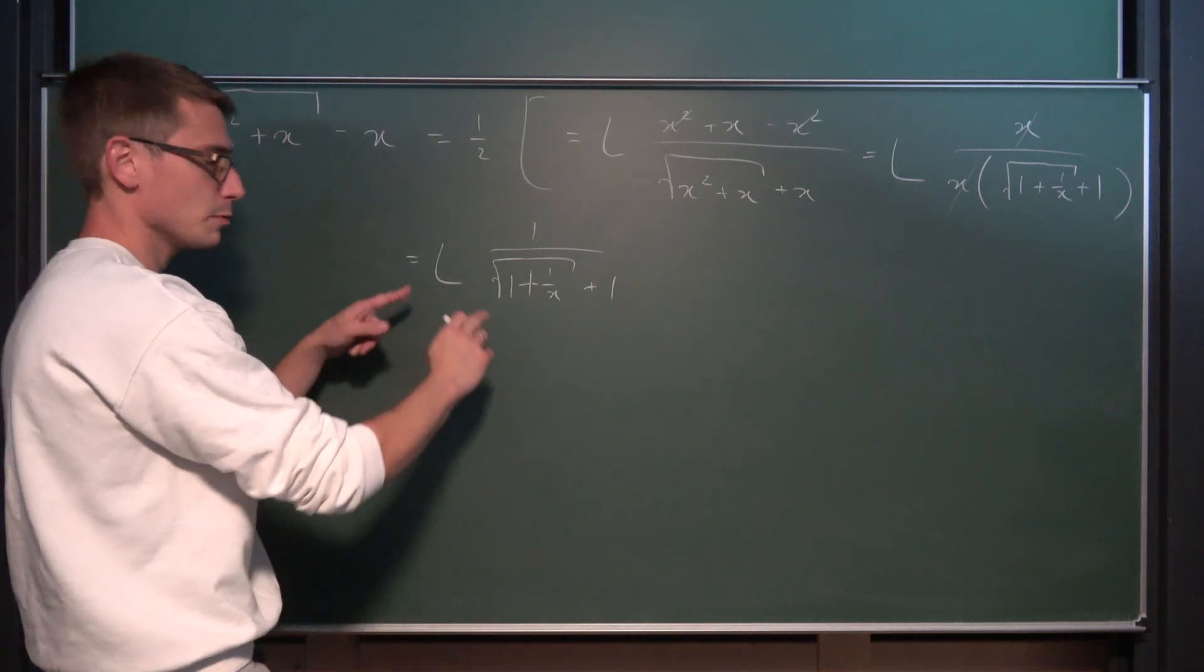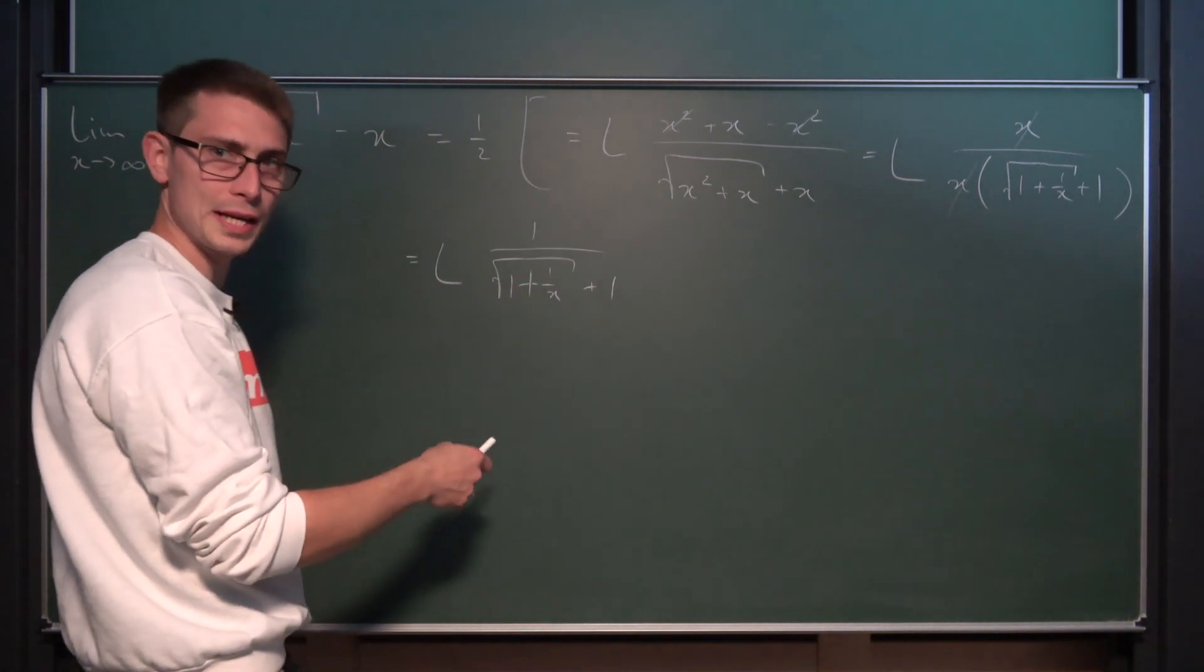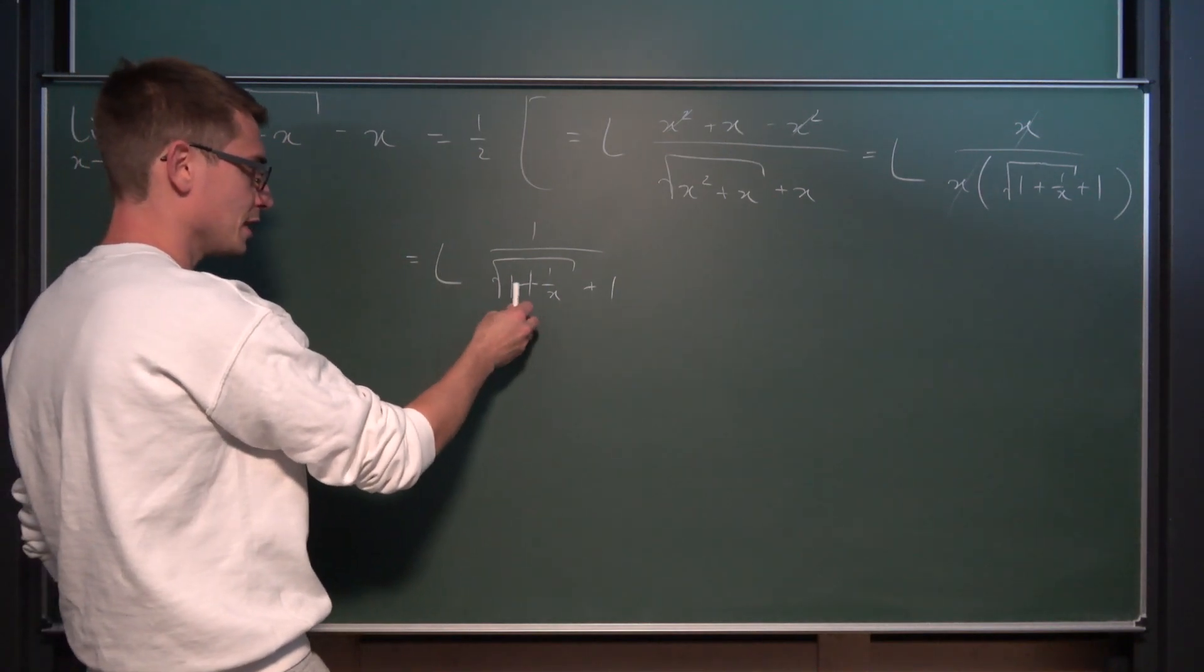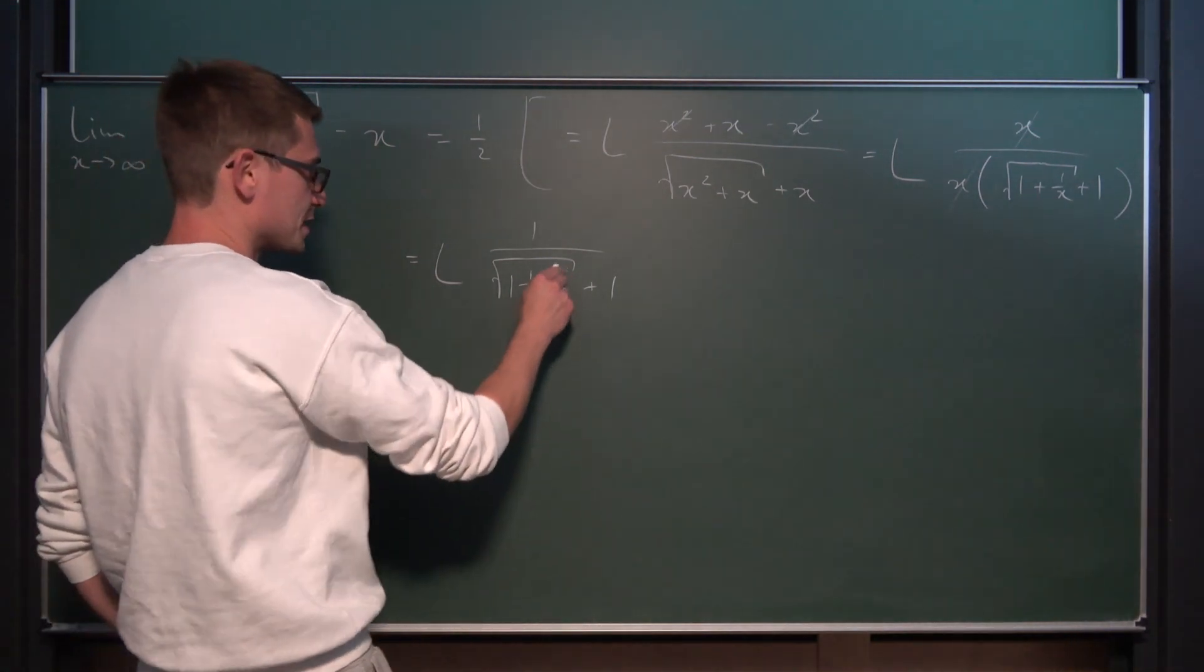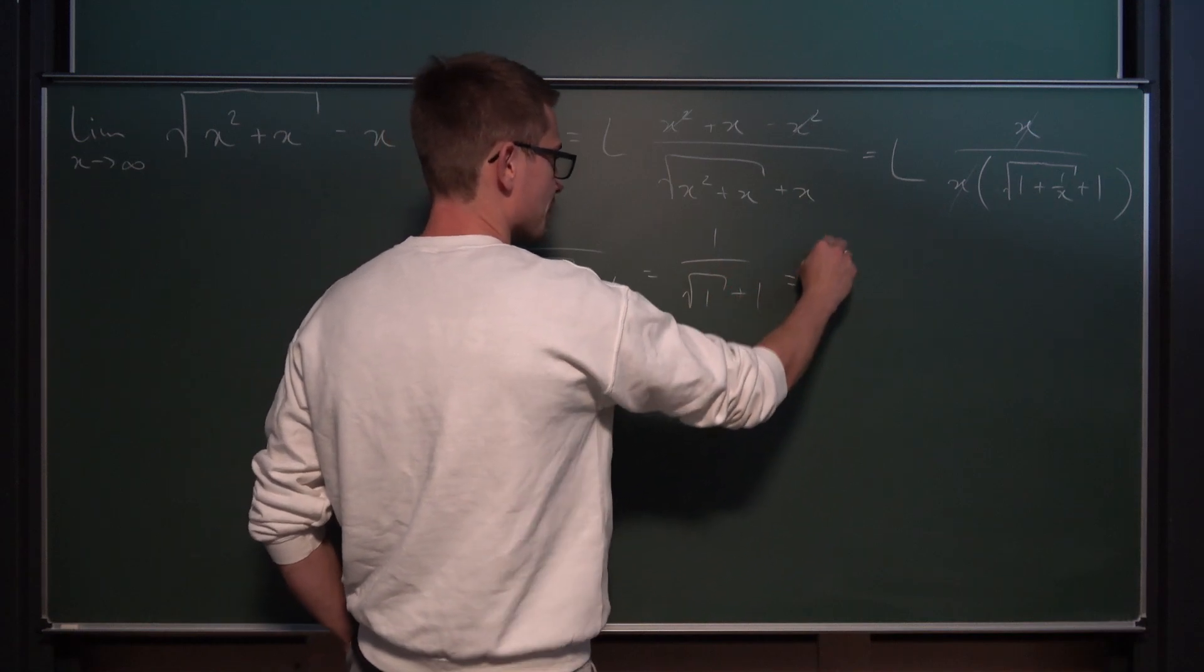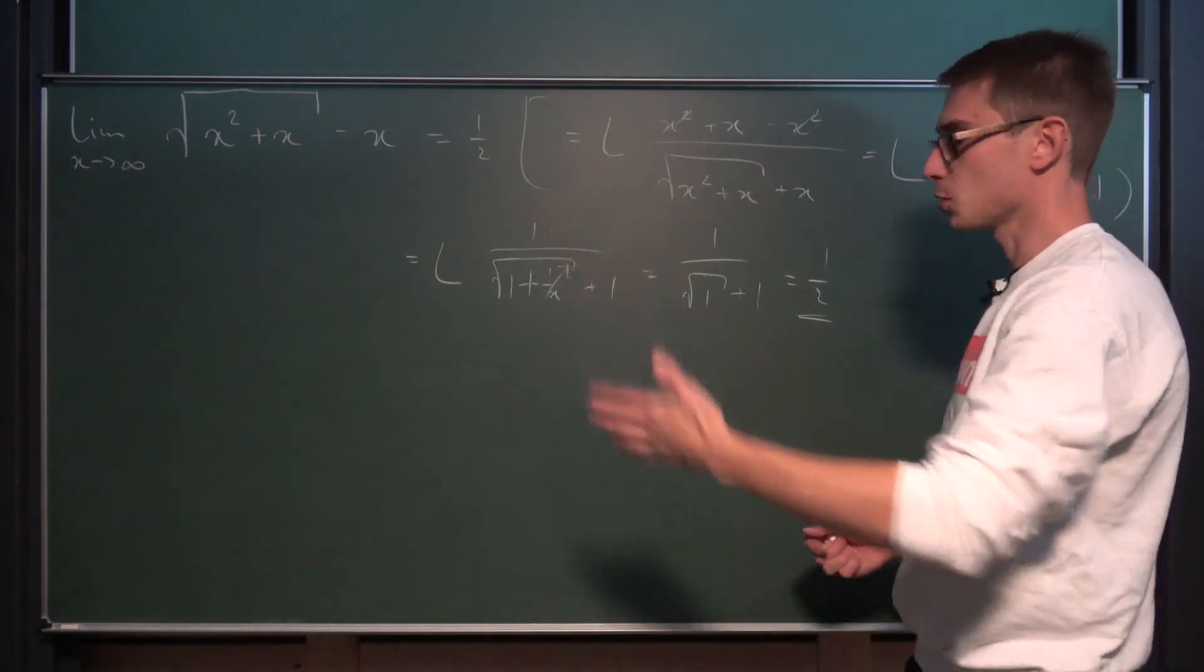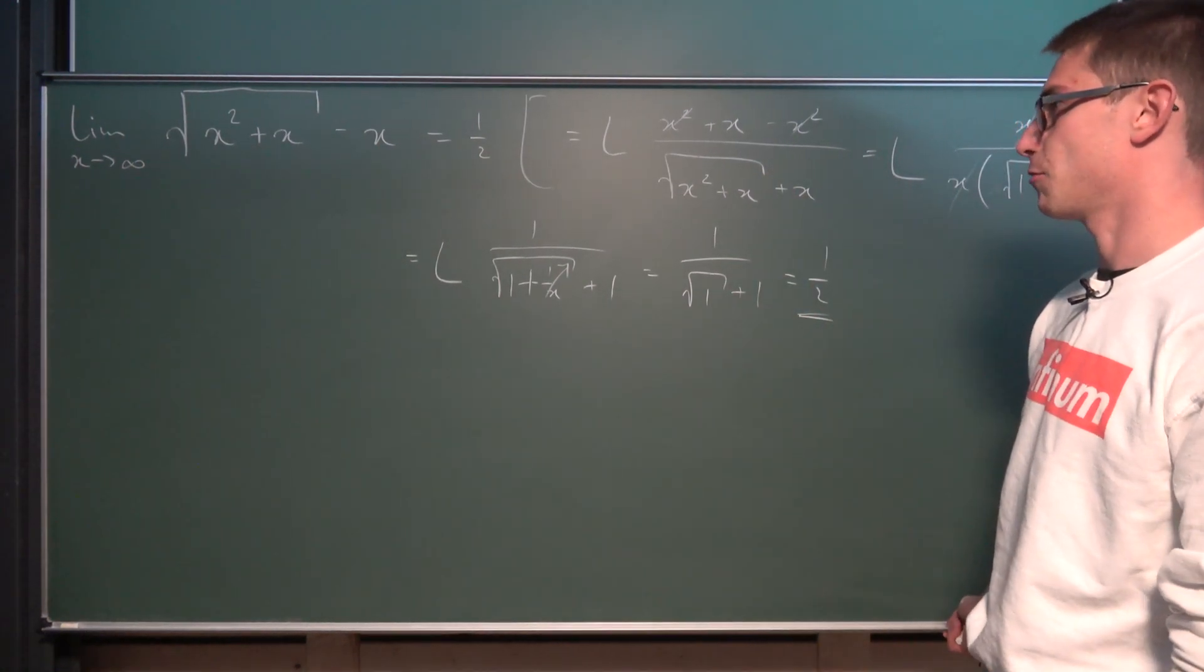If the limit goes to infinity we can just make use of the limit rules. The limit on the numerator and hopefully the denominator does exist. Since the square root is continuous on its whole domain, we can track the limit into here. Limit of a constant is just one. Plus limit of one over x for x to infinity goes to zero. Leaving us with one over the square root of one plus one. Which is nothing other than one half. Okay perfect. So that worked out. And that would be the process of evaluating it in a school context. At least a few years prior to what we have now.